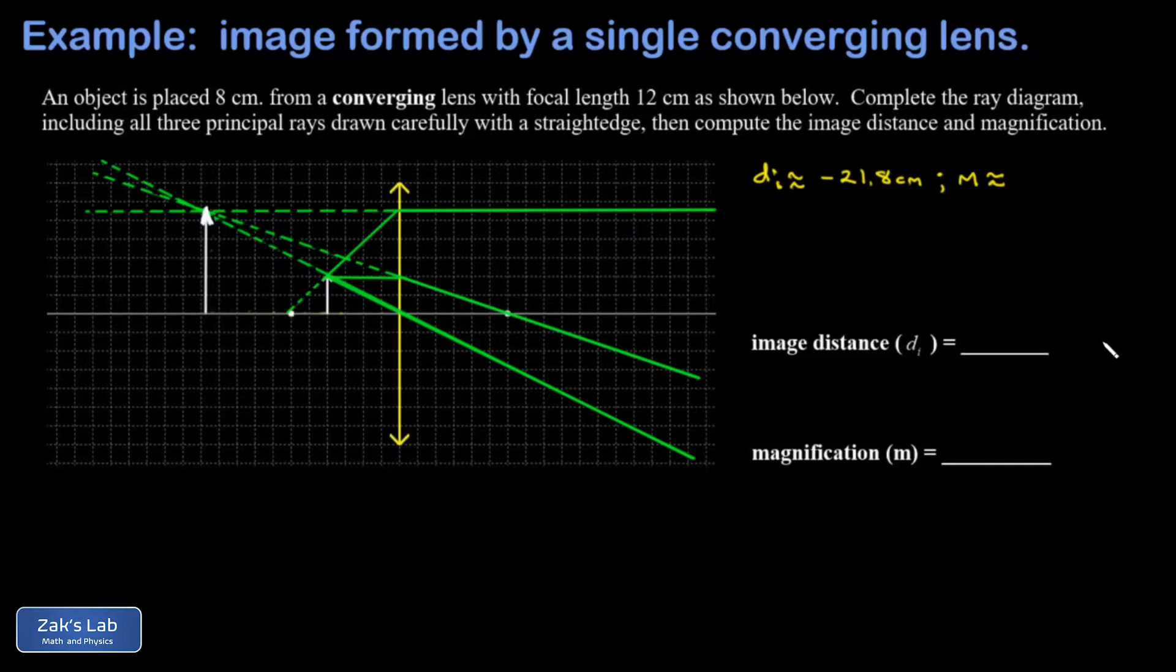Next, we approximate our magnification. And we can see in the diagram that the original object has a height of 2 spaces. So then we look at the height of our image, and it has a height of 1, 2, 3, 4, 5, about 5 and a half spaces. So our magnification is about 5 and a half over 2, and this comes out to 2.75.